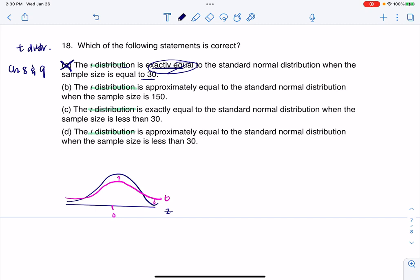The t-distribution, this is better, right? Approximately equal to the standard normal when the sample size is 150. I would say that is true. It is approximately equal, and that's well over that threshold of 30. So b could possibly be an answer.